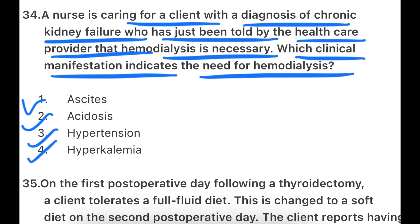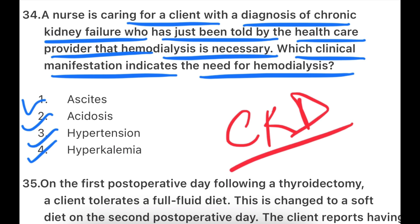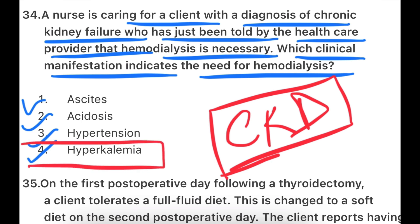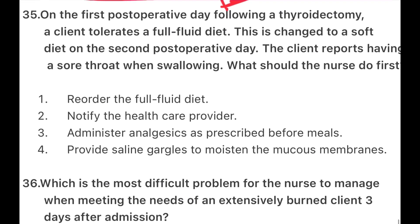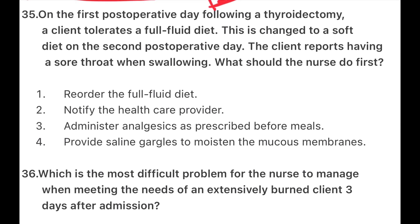If you have studied chronic kidney disease or failure, you will know that the most important thing is hyperkalemia. Because the kidney is not working and the body is in failure, there is no excretion of excess potassium from the body. So potassium levels increase, and potassium is a cardiac ion. That is why we see hyperkalemia in the patient, which means the patient needs hemodialysis. In CKD, the clinical manifestation indicating hemodialysis is hyperkalemia — increased potassium level.